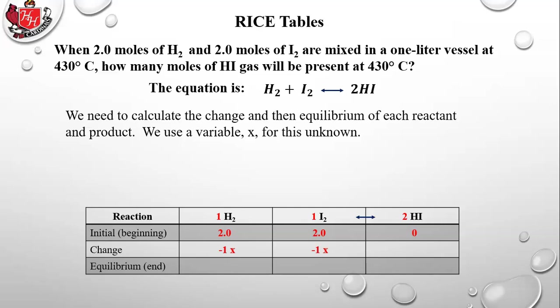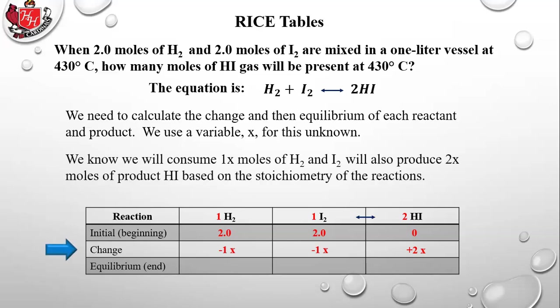We do the same for I2. The coefficient in front of I2 is 1, so it's negative 1X. The product HI on the right side is being produced — that's going to go up in value, so that's plus 2X. The 2 is because the coefficient in front of HI is 2. Whatever goes in front of the X is whatever the coefficient of that reactant or product is, and if it's a reactant, it's negative.